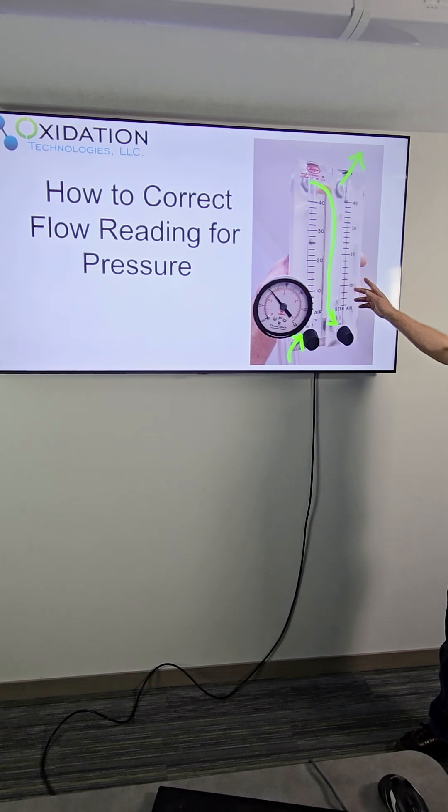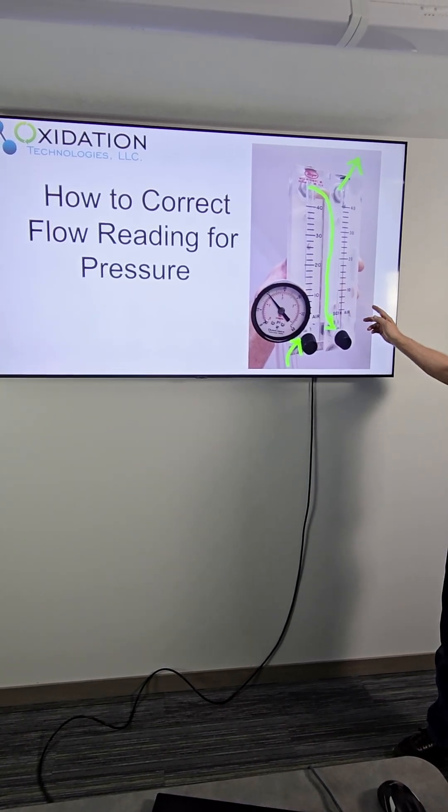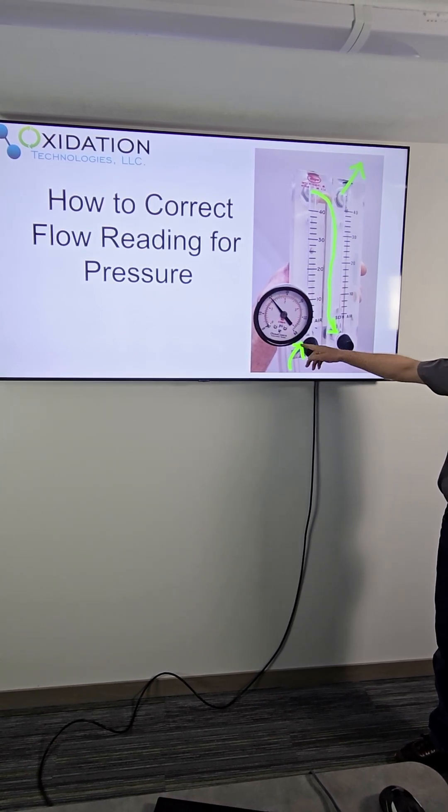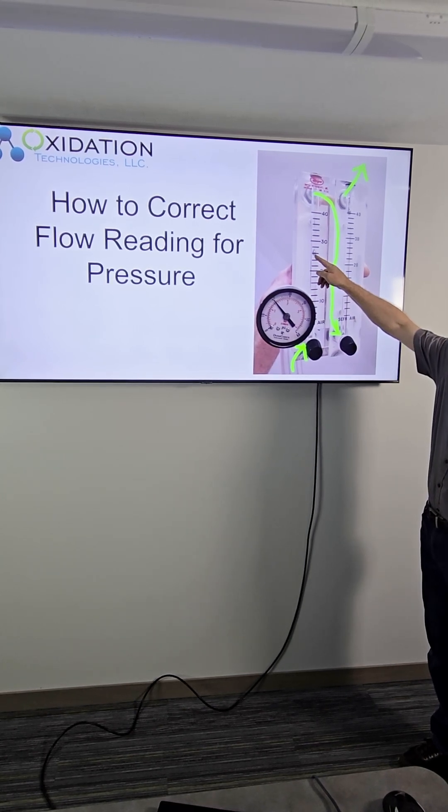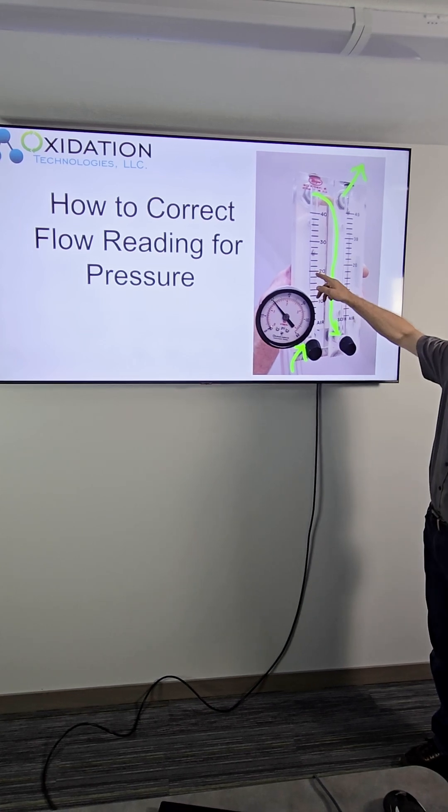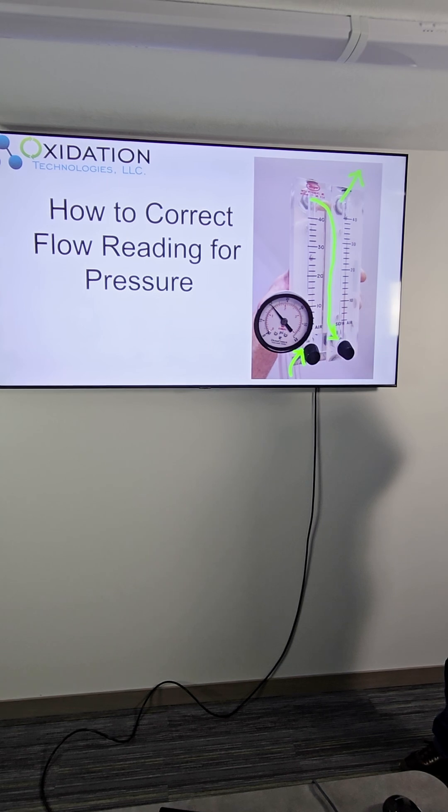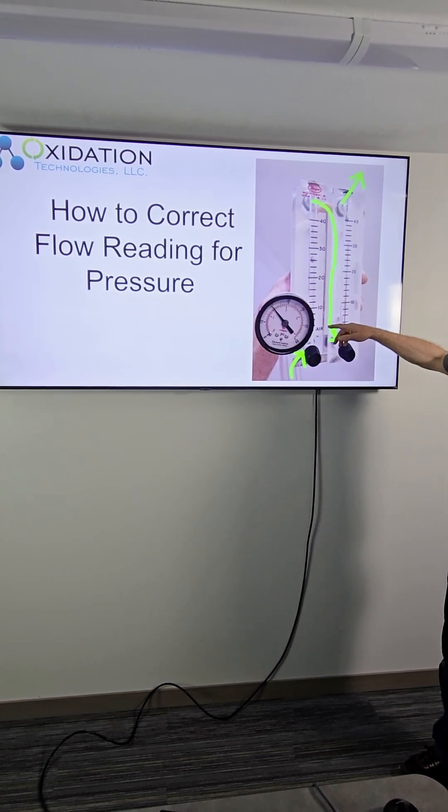So right here I've got a picture of two identical flow meters. The oxygen gas is flowing into the bottom of this one up through the tube and you can see the little ball in there that it's pushing up and it's measuring here a flow of 26 SCFH, standard cubic feet per hour of oxygen.